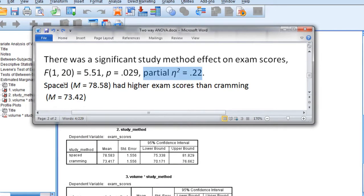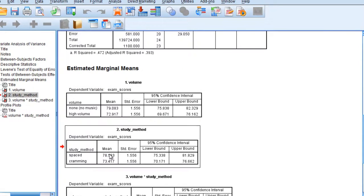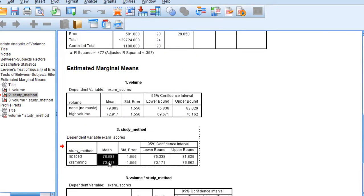Now moving to our marginal means, we can see that spaced had higher exam scores than cramming. Just summarizing that, with 78.58 for spaced versus 73.42 for cramming. And you can see those values right here once again.